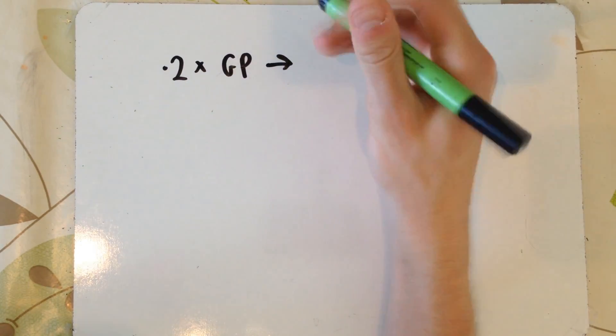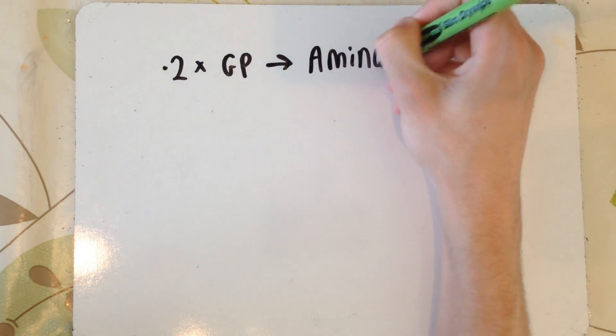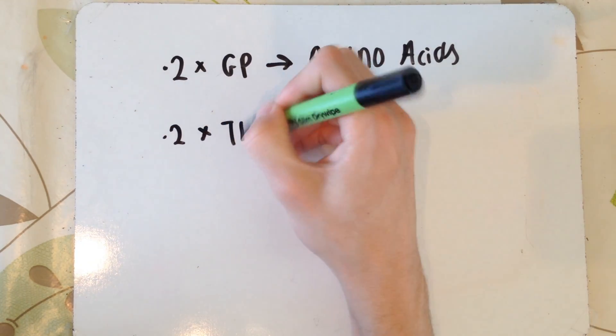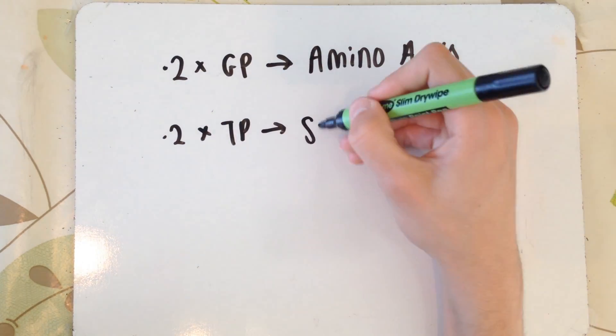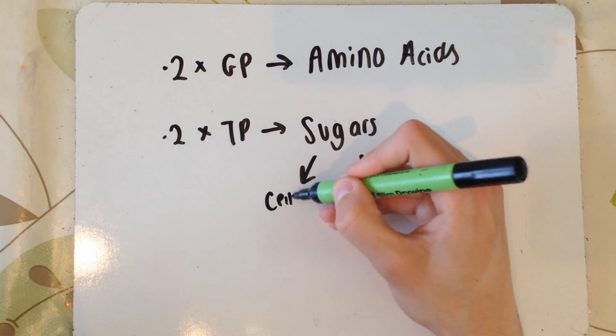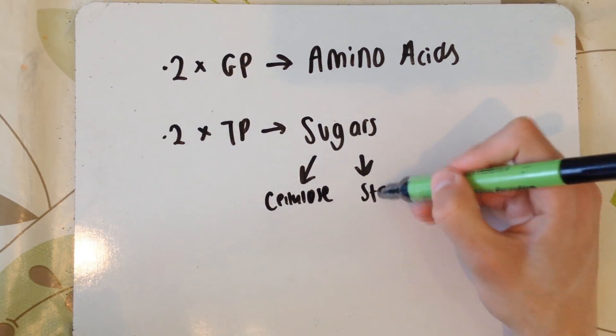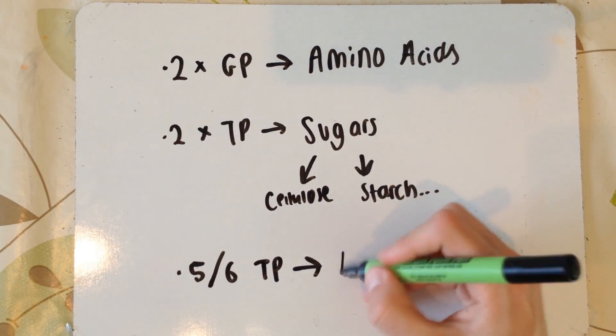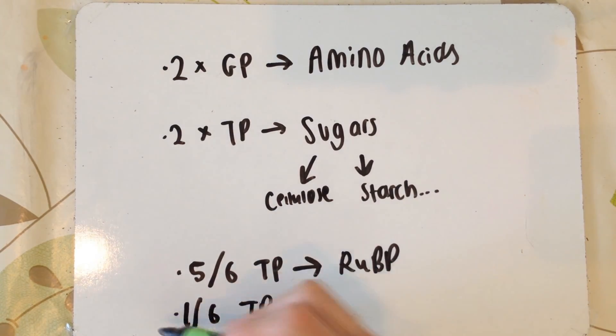The 2-glycerate phosphate can be converted to amino acids. From there you can make fatty acids, you can make lipids, and the triose phosphate are mainly used to make hexose sugars such as glucose. You can then turn this into cellulose, starch, you can combine it with fructose to make sucrose, all sorts of things like this. 5 out of every 6 of the TP molecules are in fact converted to RUBP, though, so 1 out of 6 can therefore be used to make these hexose sugars.